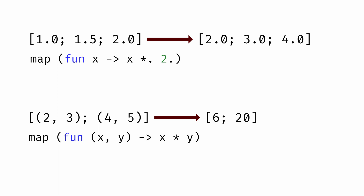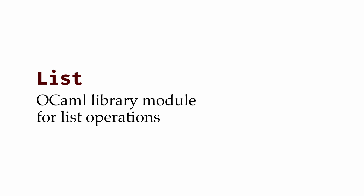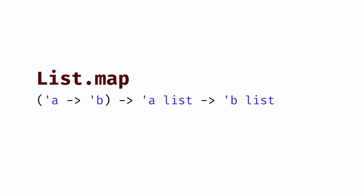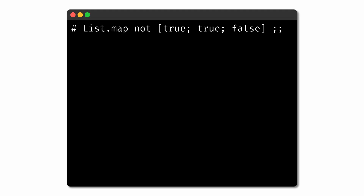But it turns out that OCaml comes with a built-in list module that already includes functions for mapping, folding, filtering, and a number of other list-related operations. Rather than rewrite the same code ourselves, we can make use of the abstractions provided by the list module. The list.map function behaves exactly like the map function we've just written. We provide it with a function from alpha to beta to apply to each element in a list of type alpha list, getting back a list of type beta list.